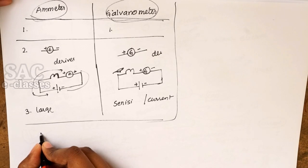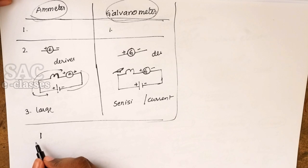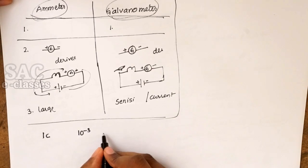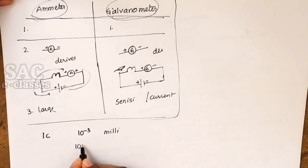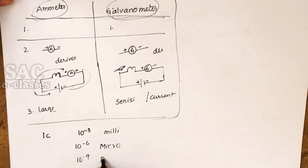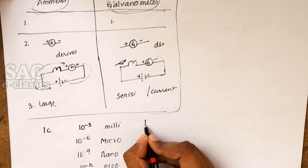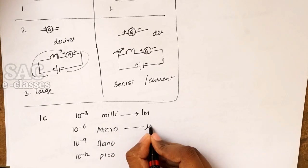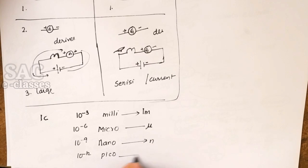Before learning the numericals related to electrical current, some important prefixes: milli means 10⁻³ (symbol m), micro means 10⁻⁶ (symbol μ), nano means 10⁻⁹ (symbol n), and pico means 10⁻¹² (symbol p).